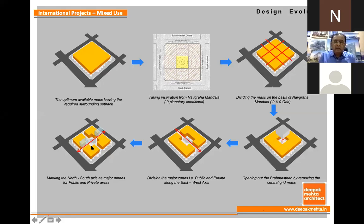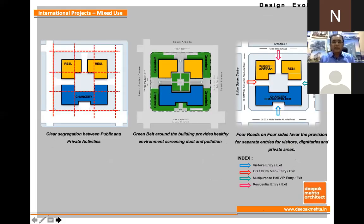The site can be used for deriving a concept and we can fit the requirement and brief within that context itself. The blue shows the chancery, the yellow at the back is the residence, with green areas, and all four sides have roads.